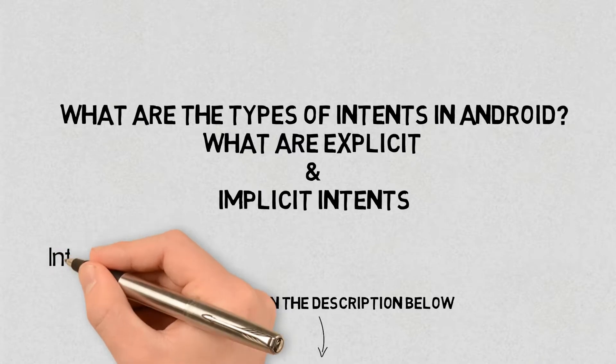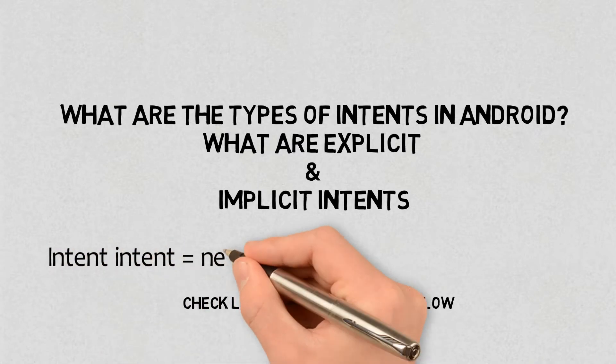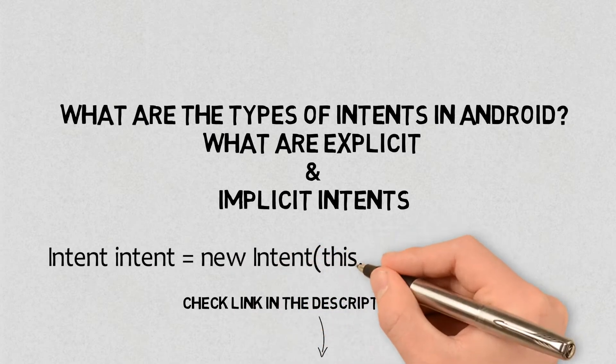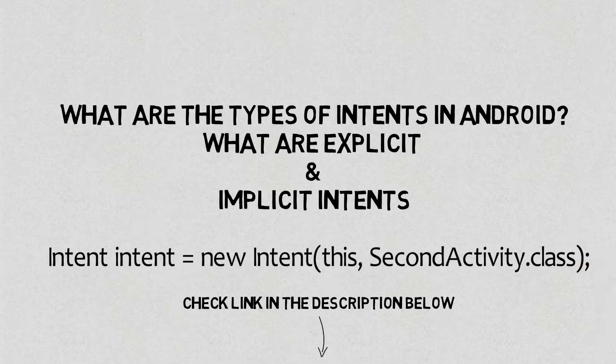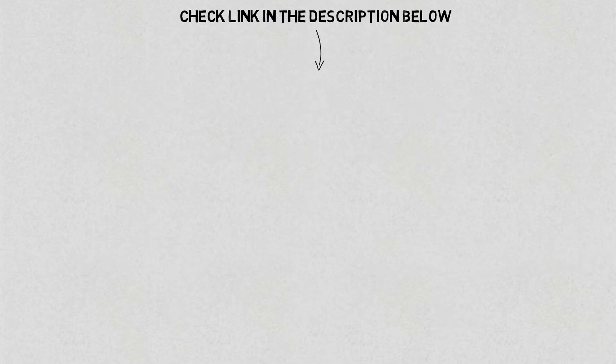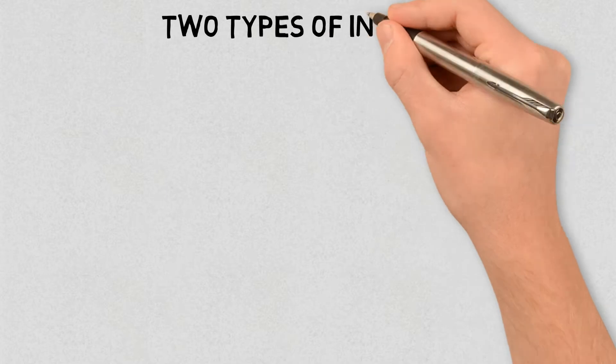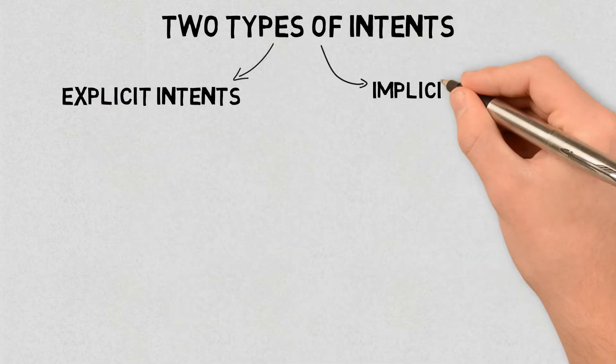So far, you have seen how to create an intent that launches a specific activity using Intent intent equals new Intent, this comma SecondActivity.class. There are two types of intents: explicit and implicit intents.